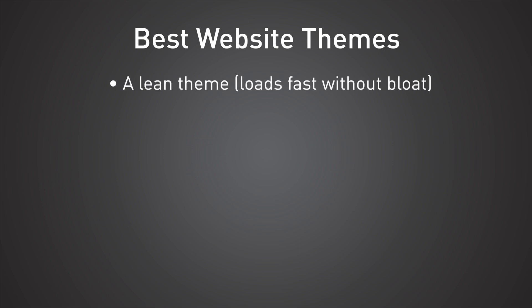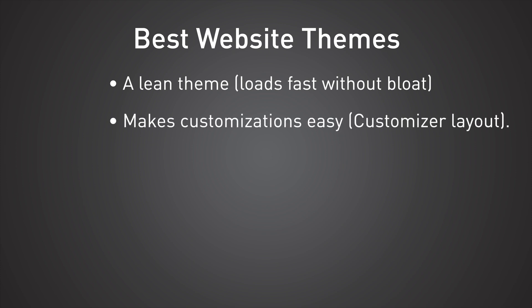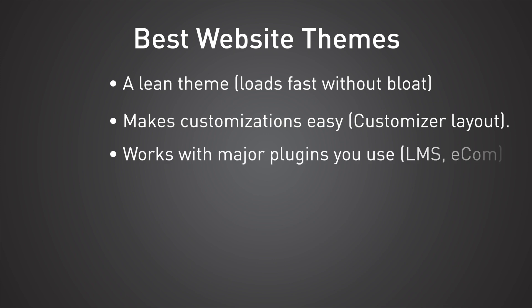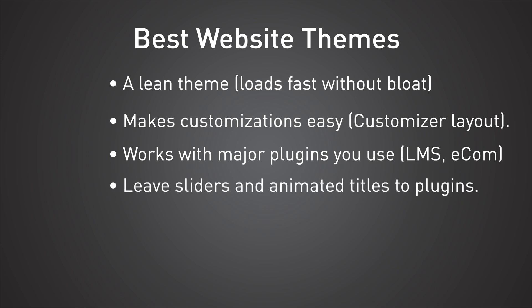Because of the way people design WordPress websites these days, it's favorable to have a lean theme that doesn't have too many bells and whistles but makes simple customizations very easy. My advice is to find a theme that works with some of the major plugins you want to use — maybe there's a specific online course platform or page builder you want. Find a theme that works well with it. Features like sliders and animated titles are really best left to dedicated plugins or a page builder.